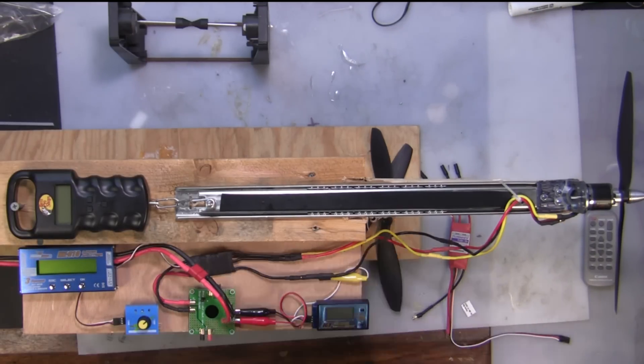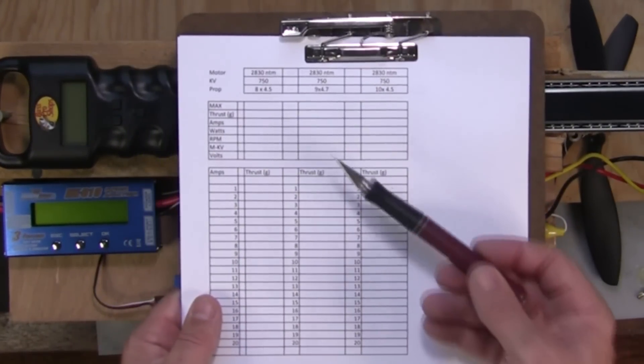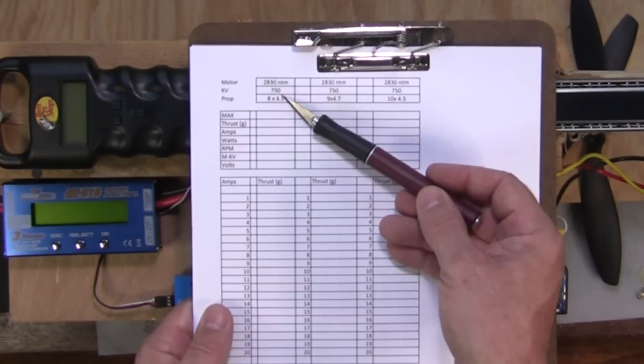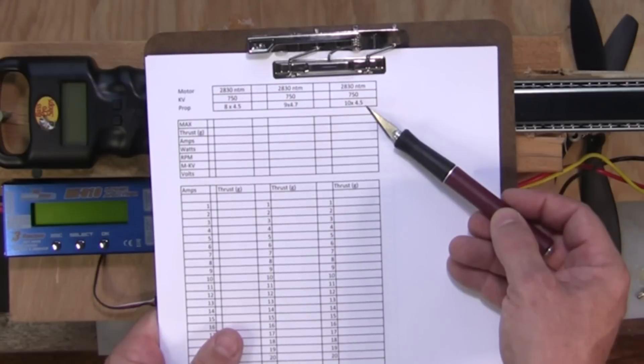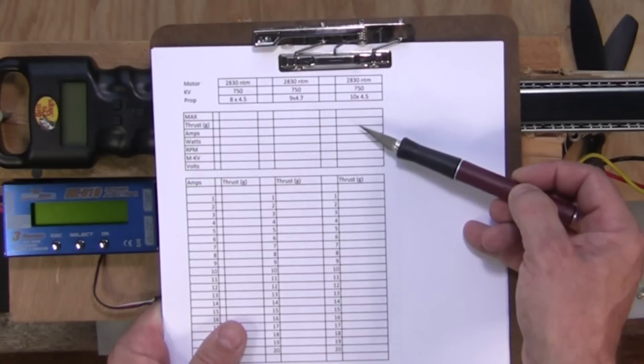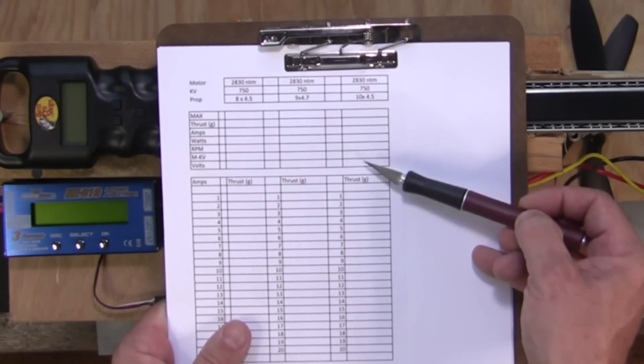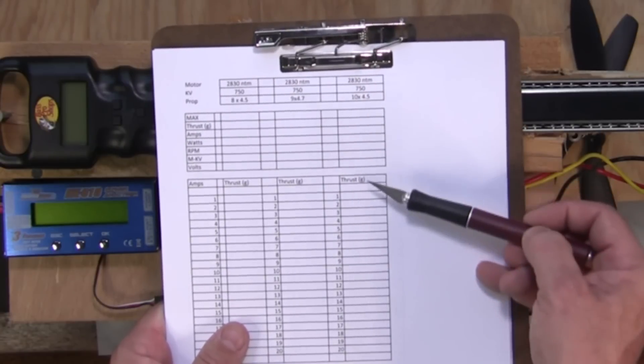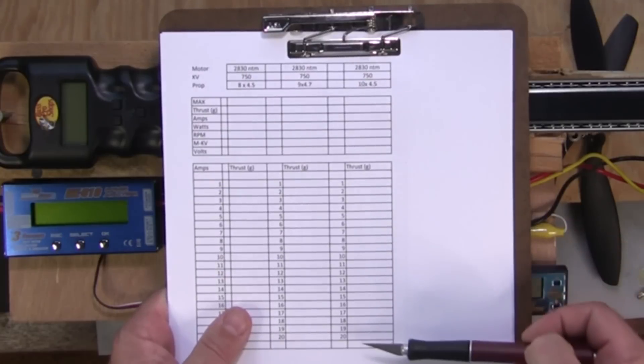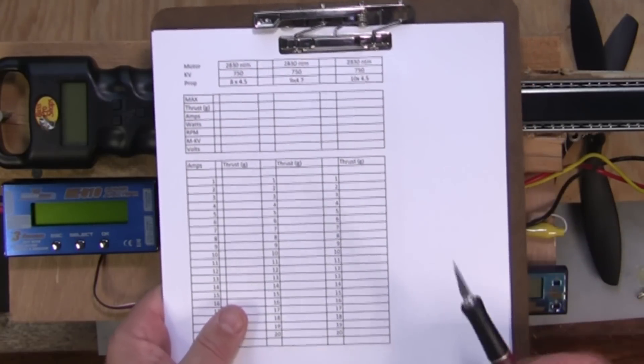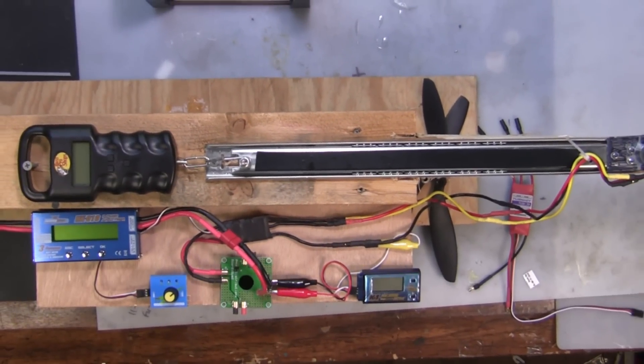And then once you start recording your information, you're going to need a sheet to be able to write all the information down. What I'm going to do right here, this is we're doing the 750 KV motor with the 10x4.5 prop. We're going to put it down here. And then we're going to measure the maximum thrust, amps, watts, RPM, measured KV and volts. That's all in the maximum. And then we're going to measure how much thrust we're going to get at 1 amp, 2 amp, 3 amp, 4 amp and so on.